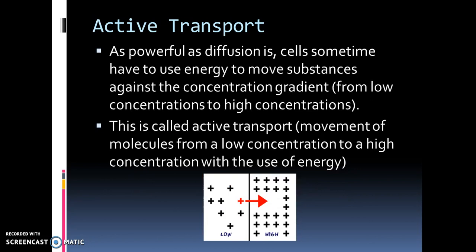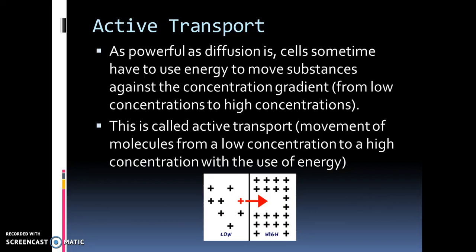Now, active transport. As powerful as diffusion is, cells sometimes have to use energy to move substances against the concentration gradient. That means moving things from a low concentration to a high concentration — the opposite of diffusion. This is called active transport: the movement of molecules from a low concentration to a high concentration, which requires energy. For example, molecules on the low-concentration side are moved to the high-concentration side using energy.